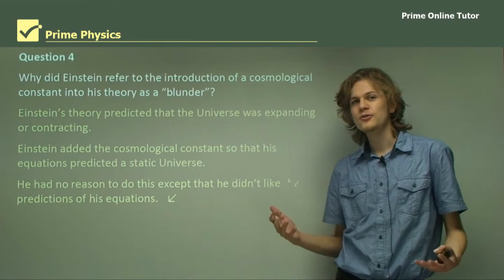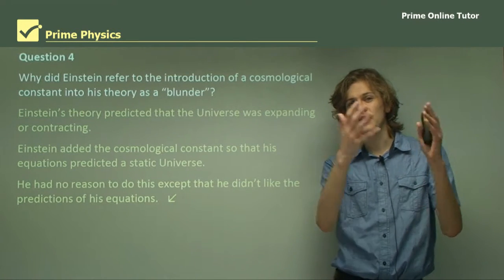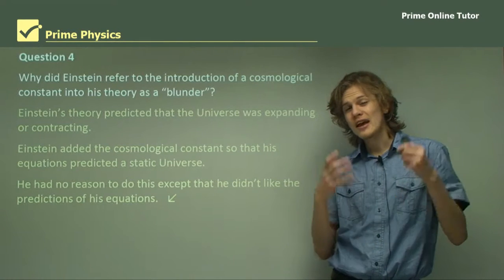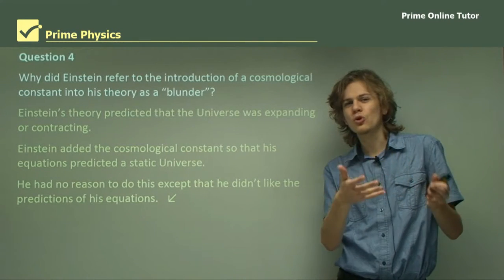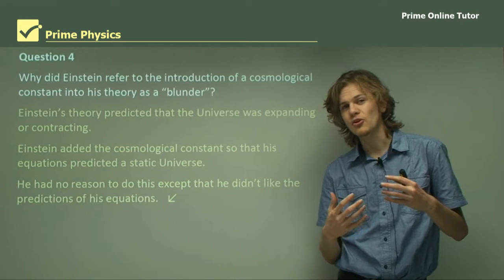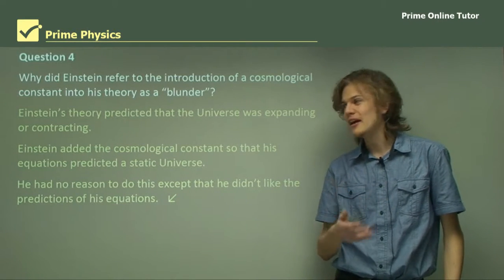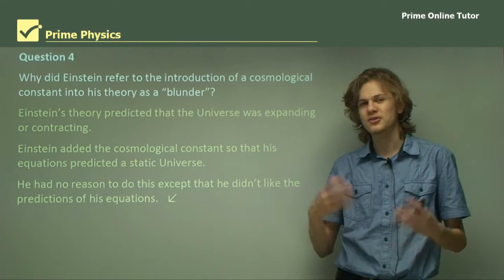He had no reason to do this except that he didn't like the predictions of his equations. These days, when we use our powerful telescopes and things to watch the expansion of the universe, we can observe that there might be a cosmological constant of some sort. But we have observations to base that on, rather than just a vague wanting it to be a particular answer.